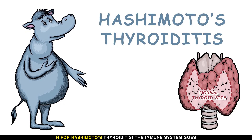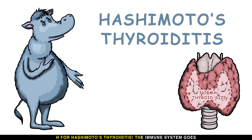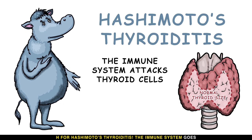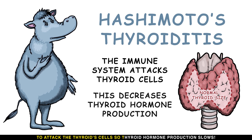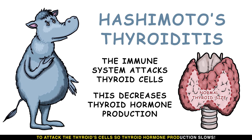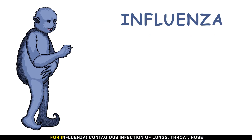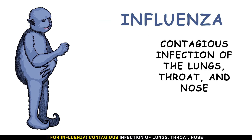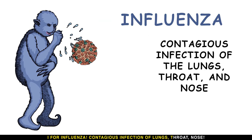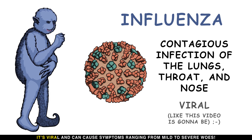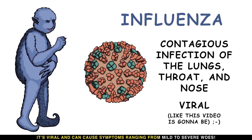H is for Hashimoto's thyroiditis — the immune system attacks the thyroid cells, so thyroid hormone production slows. I is for influenza, a contagious infection of the lungs, throat, and nose. It's viral and can cause symptoms ranging from mild to severe.